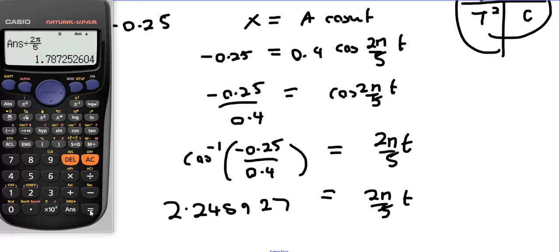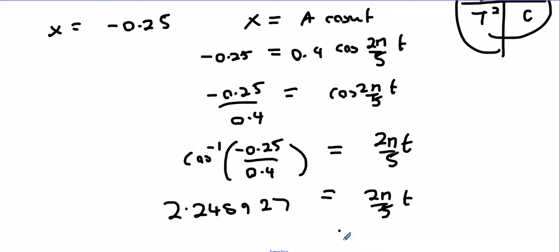And t equals 1.79 seconds. That's that one done. Not too bad. So once again, just to hit the point home there, we have an equilibrium position and you can bob up and down.